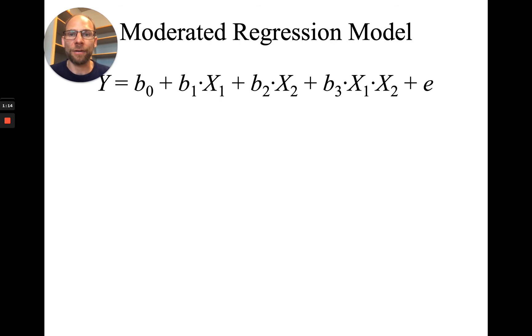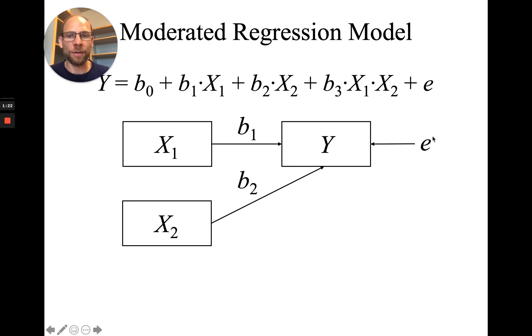In terms of a path diagram, we can depict this model like this. We have a direct effect of x1 on y, that is b1, and then also there's a direct effect of x2 on y, that is b2. So those will be the two main effects.